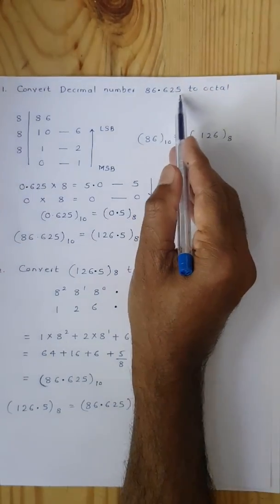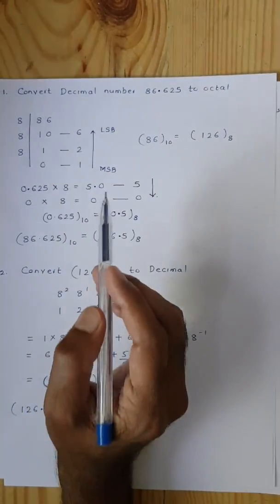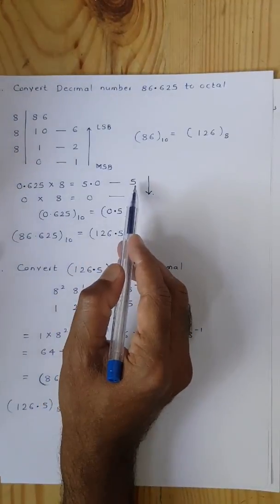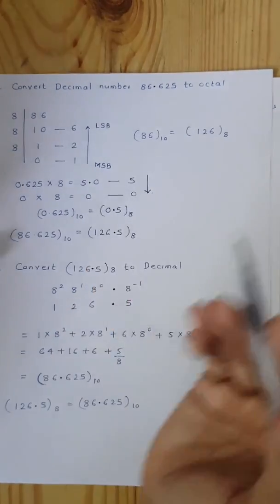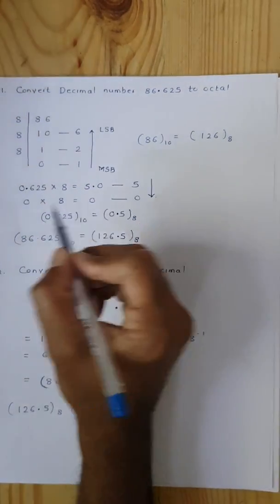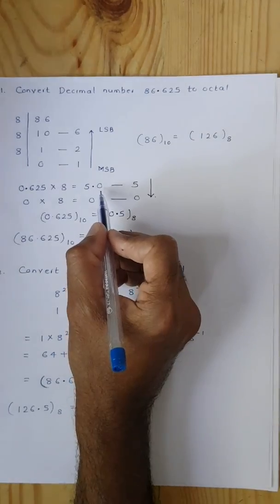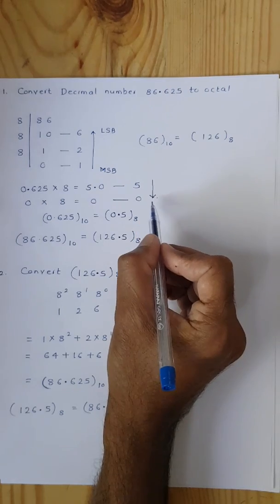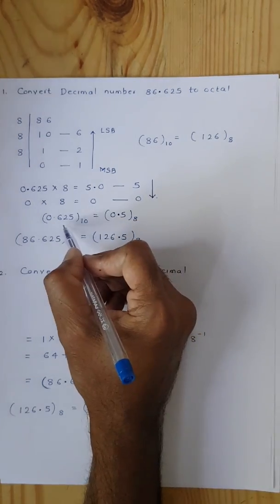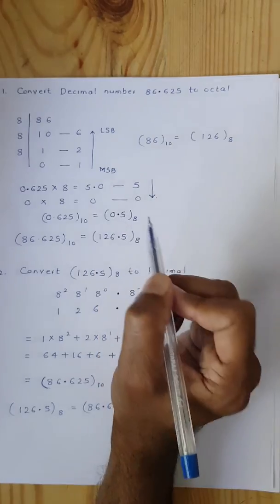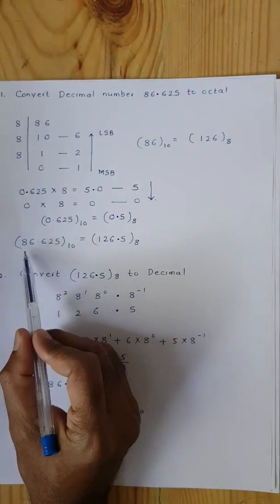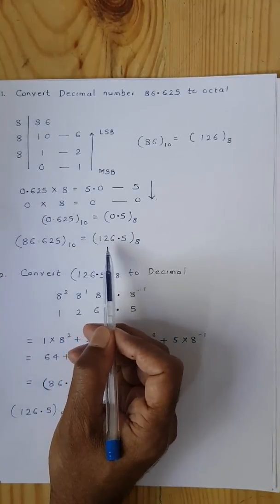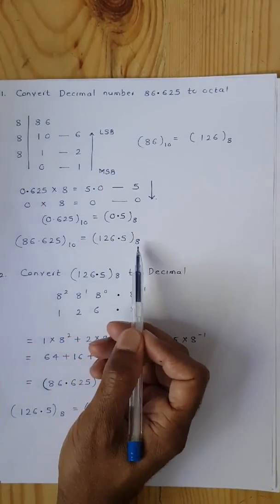For the fraction part, 0.625 is multiplied by 8, giving 5. The integer part 5 is taken as the digit, and 0 (the fractional part) is carried forward. Writing from top to bottom, MSB to LSB, the octal equivalent of 0.625 is 0.5. Therefore, decimal 86.625 equals octal 126.5.